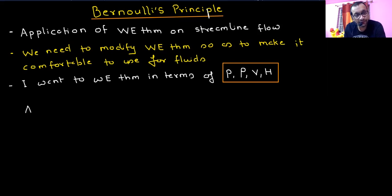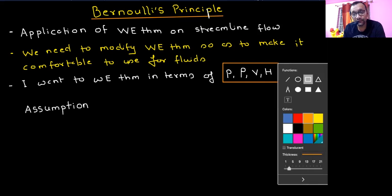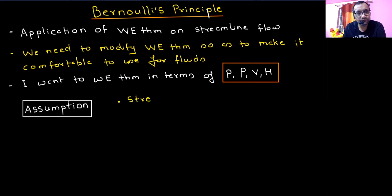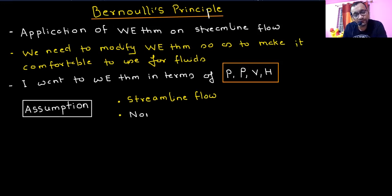Now the assumptions — these are very important before you apply Bernoulli's theorem. You need to make sure these things are valid for that flow. The first assumption is that it is a streamlined flow. The second is that it is a non-viscous flow.